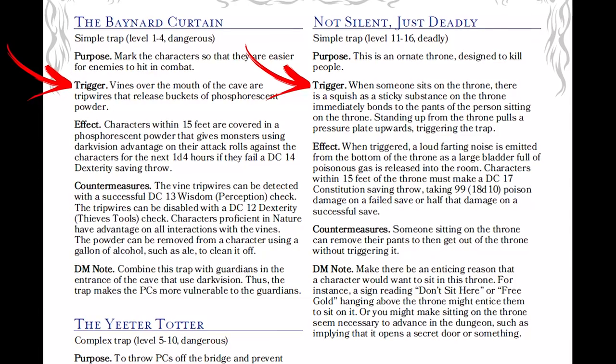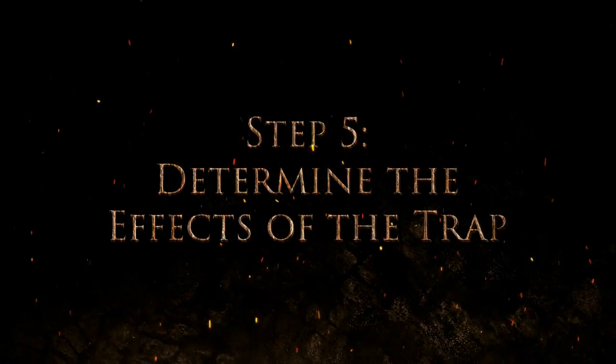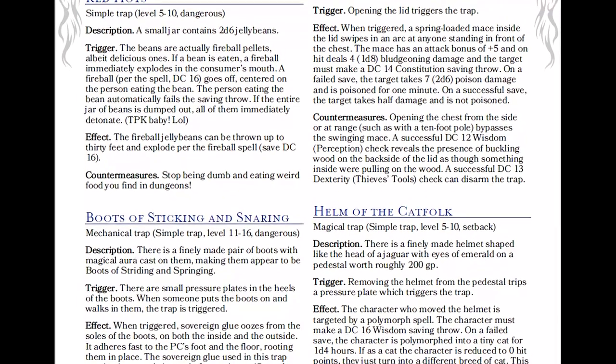As the Dungeon Master, you can tweak these numbers as desired for your own groups. For instance, I sometimes decide that the DC for finding a trap might be fairly high, but once they find it, disabling it isn't too hard — or vice versa. Step 4: Determine what triggers the trap. Simply decide what sets the trap off. Your imagination is the only limit on what a trigger could be. Step 5: Determine the effects of the trap. Do spikes spring out of the ground? Do poisonous darts fly from the walls? Does acid spray from the mouth of a statue nearby? The effects are limited only by your creativity. When determining the effects, this is when you decide what the saving throw DC or the trap's attack bonus is, based on the charts from step three, and what damage it deals.